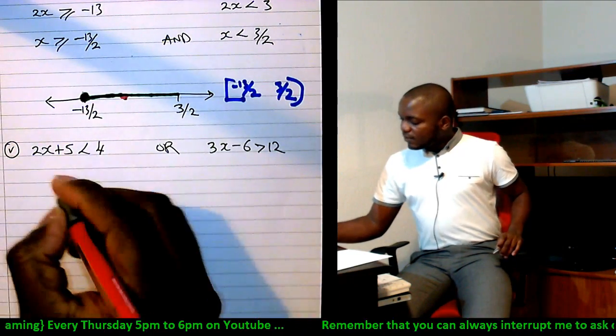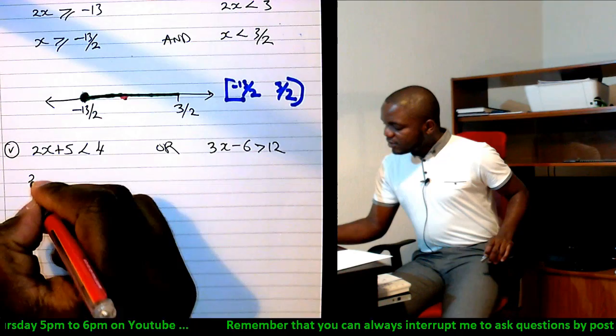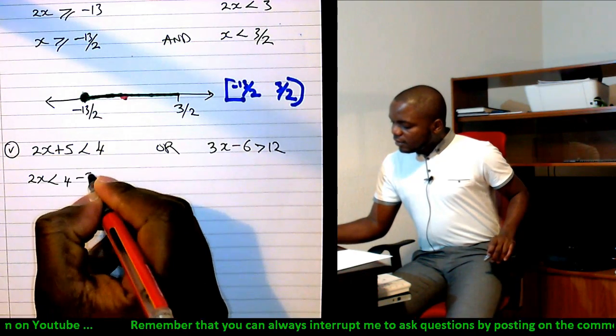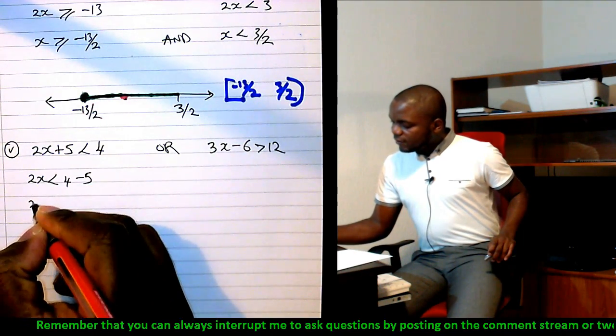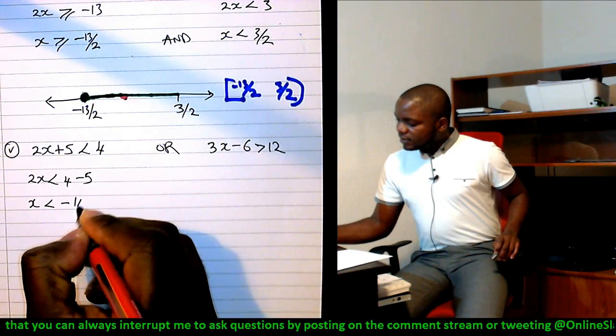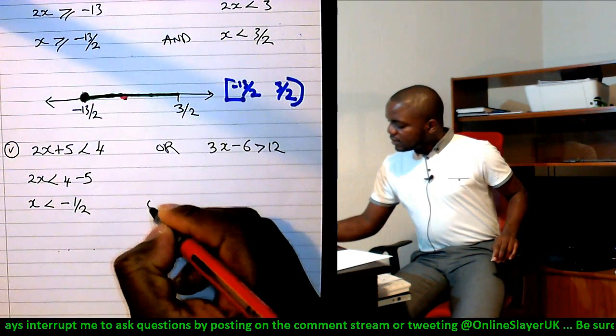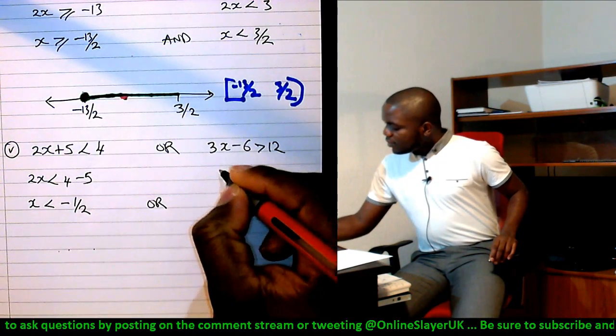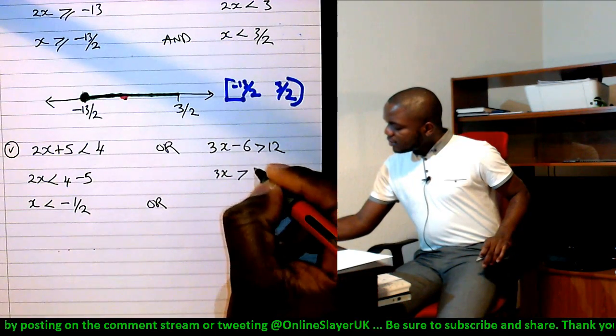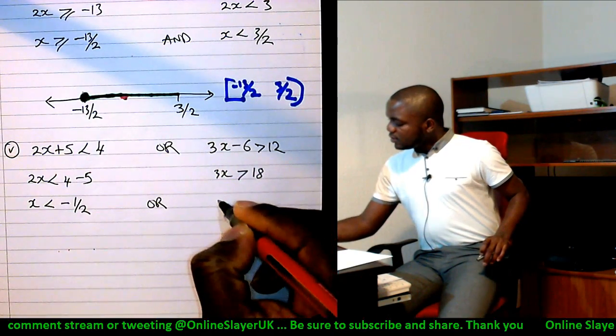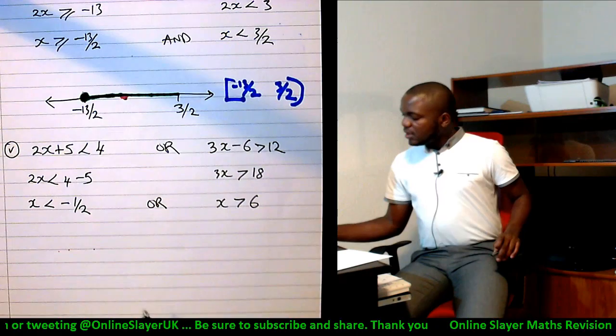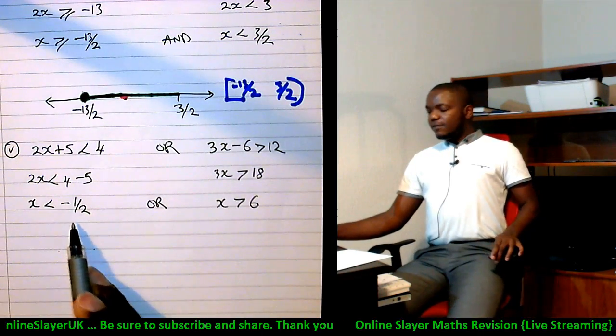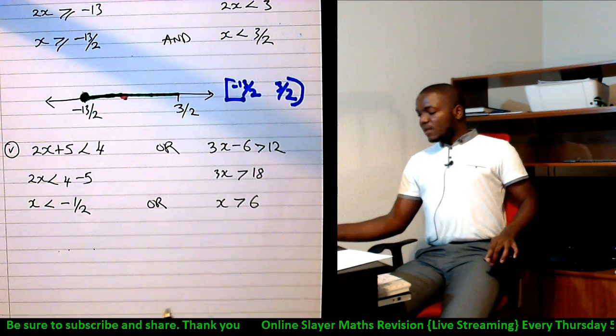Here, if you make x the subject of the formula, you're left with x is less than minus half. And it says, when you make x the subject, x is greater than 18, so x is greater than 6.